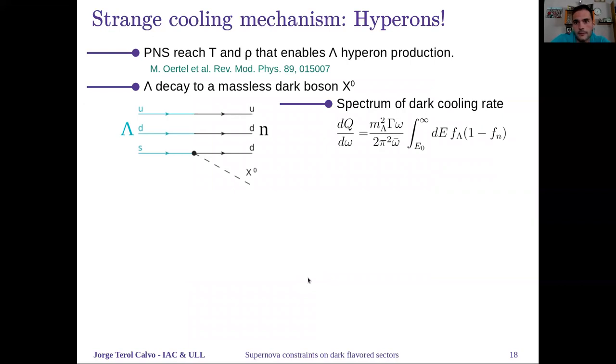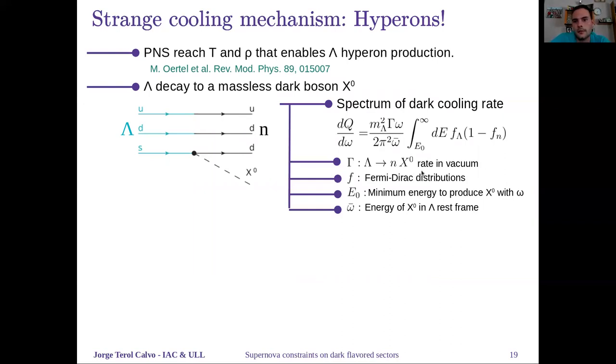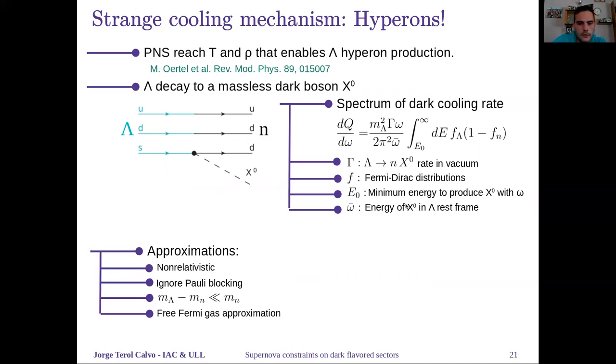One can calculate the spectrum of the cooling rate, which depends on the decay rate in vacuum, the distribution of the lambdas, and the neutron energies. This expression can be simplified with some approximations to get a very simple expression that only depends on the decay rate, the average temperature of the proto neutron star, and the number density of neutrons. This is useful for back-of-the-envelope calculations, but we have done all our work with the full expression, which agrees quite well with the very simple approximation.